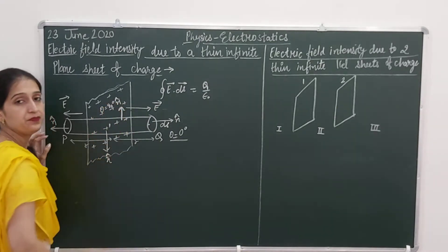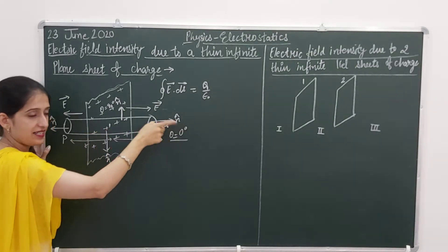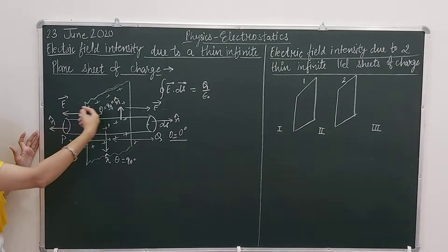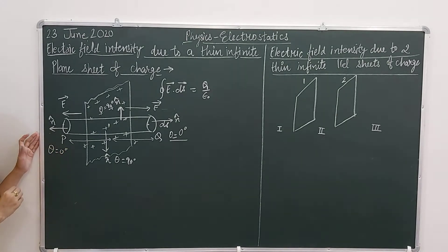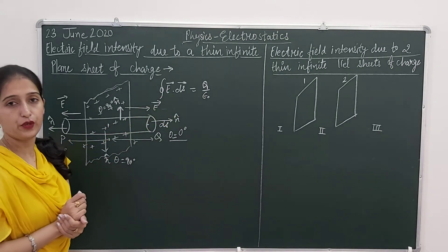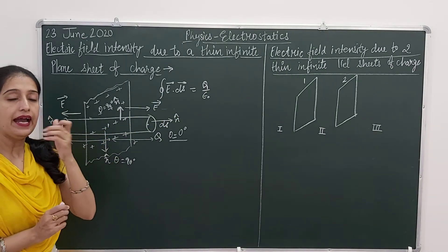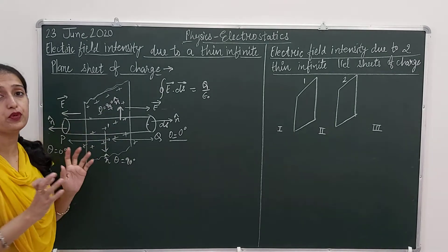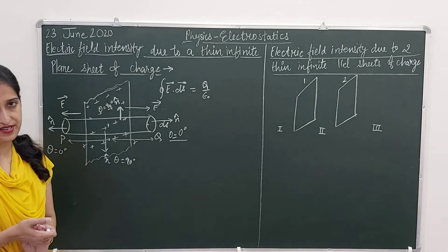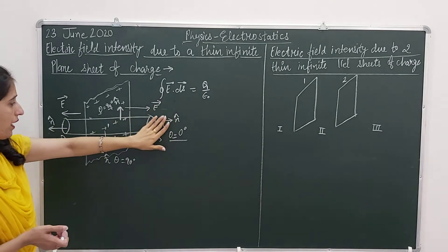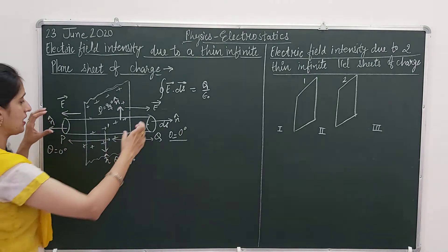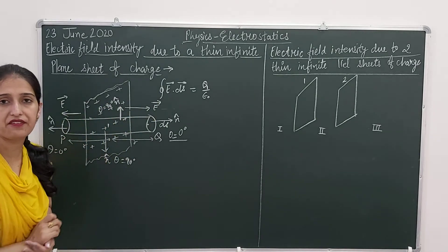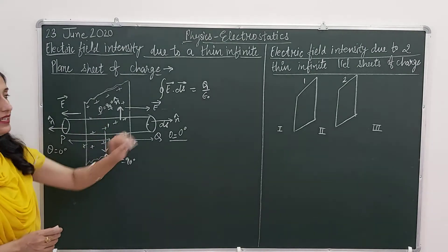For the curved surface, the angle between the electric field intensity and the area vector is 90 degrees. For end P, the area vector and electric field intensity are in the same direction, so theta equals 0 degrees. For the curved surface, theta is 90 degrees. We know when we open this dot product we get cos theta, and cos 90 is 0 and cos 0 is 1. So the curved surface terms do not contribute anything to calculate the flux. For various positions, we get electric flux only from these two ends. For other points, the electric field and area vector are perpendicular, and cos 90 is 0.